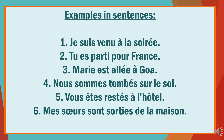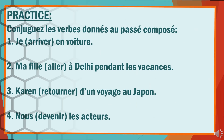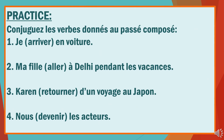Mes sœurs sont sorties de la maison — my sisters left the house. Please note that whenever the subject is plural, there is an extra -s attached to the participle. Whenever the subject is feminine, there is an extra -e attached to the participle. You can use these four examples to practice forming the passé composé using être — make sure you follow the rule of agreement. Pause the video, solve them, and check your answers on the next slide.